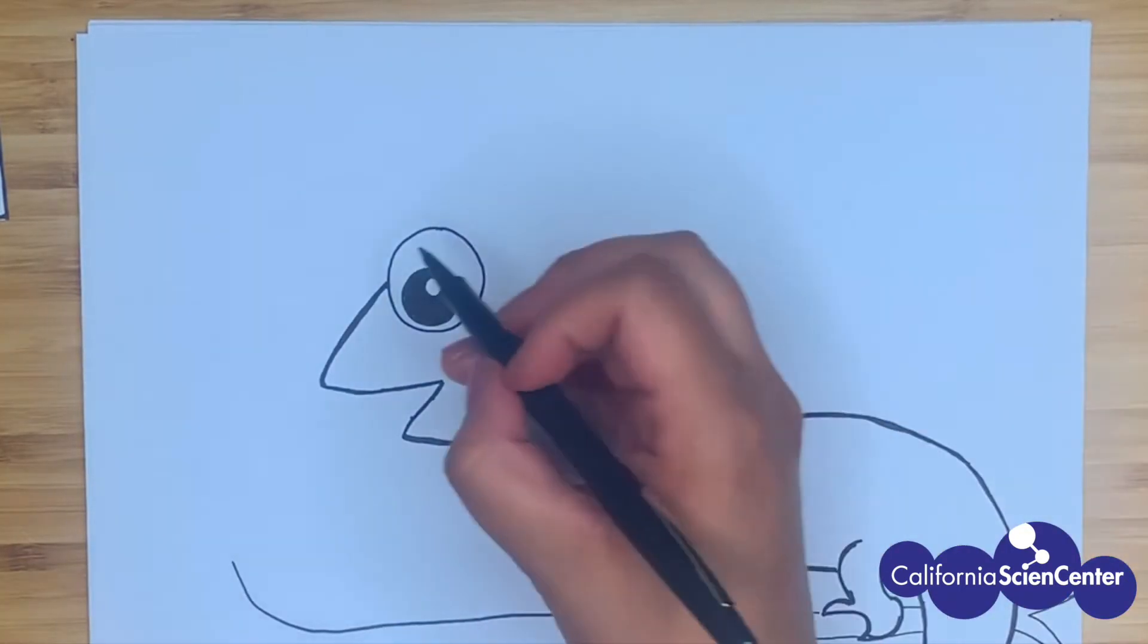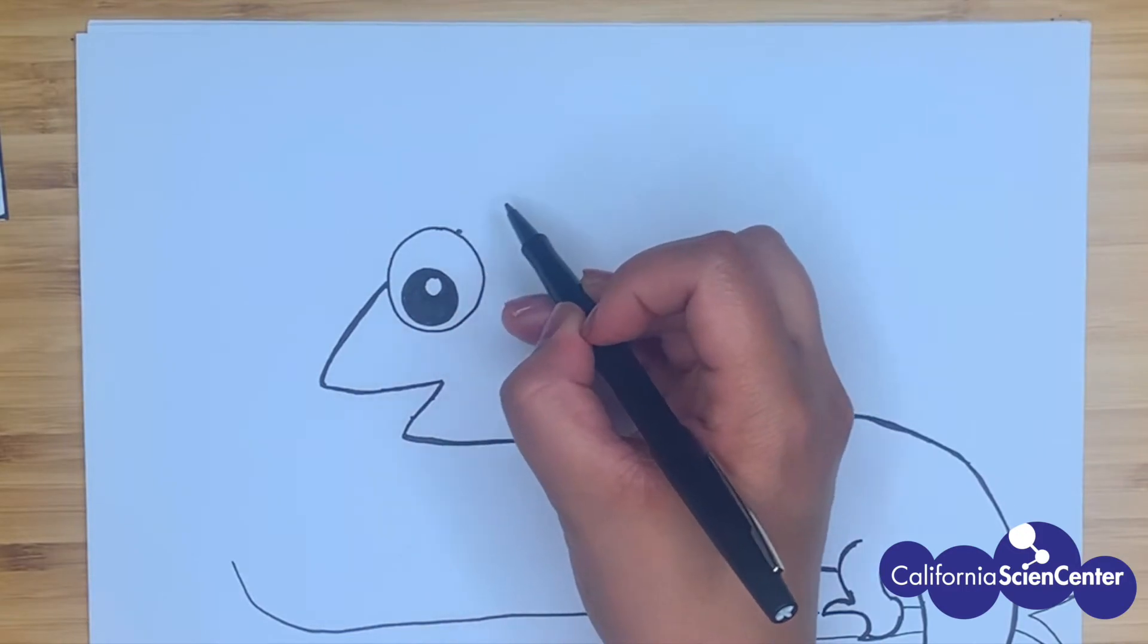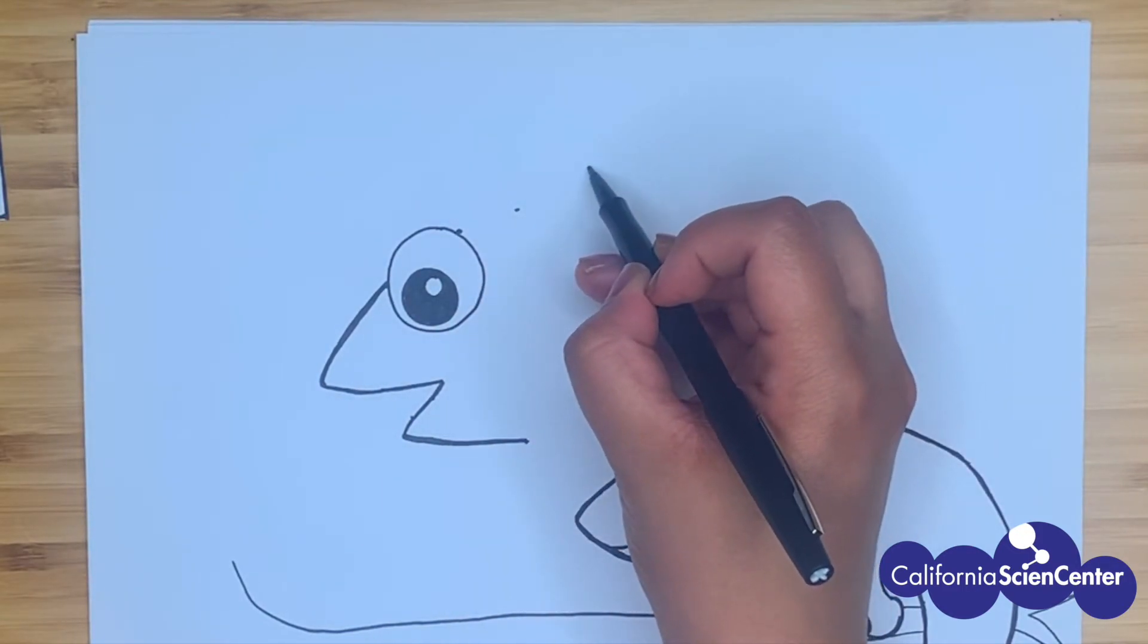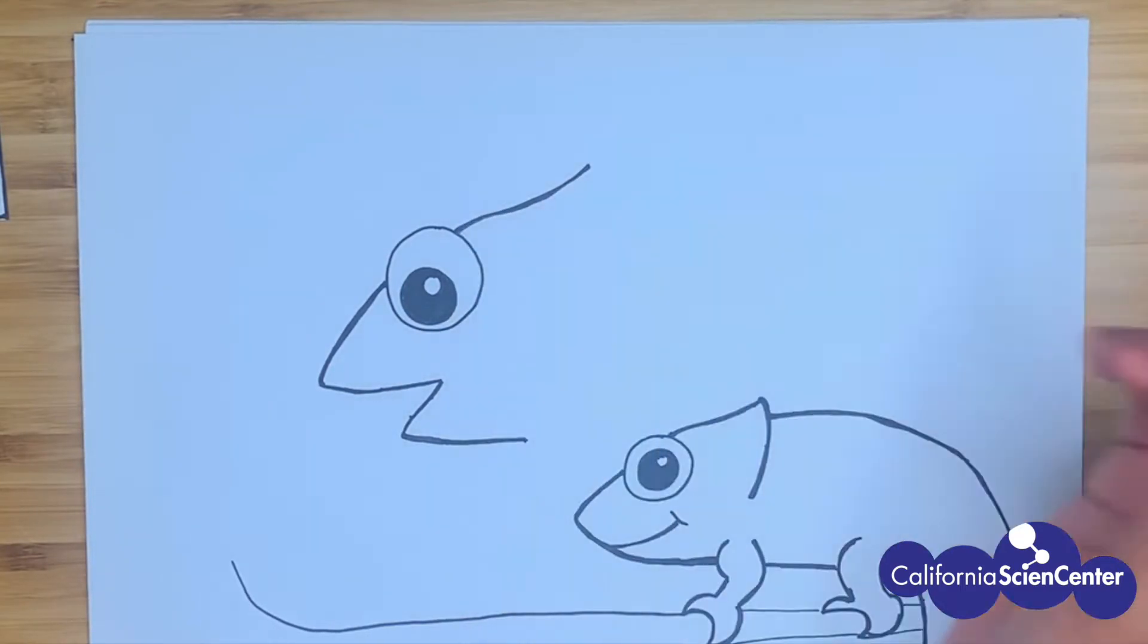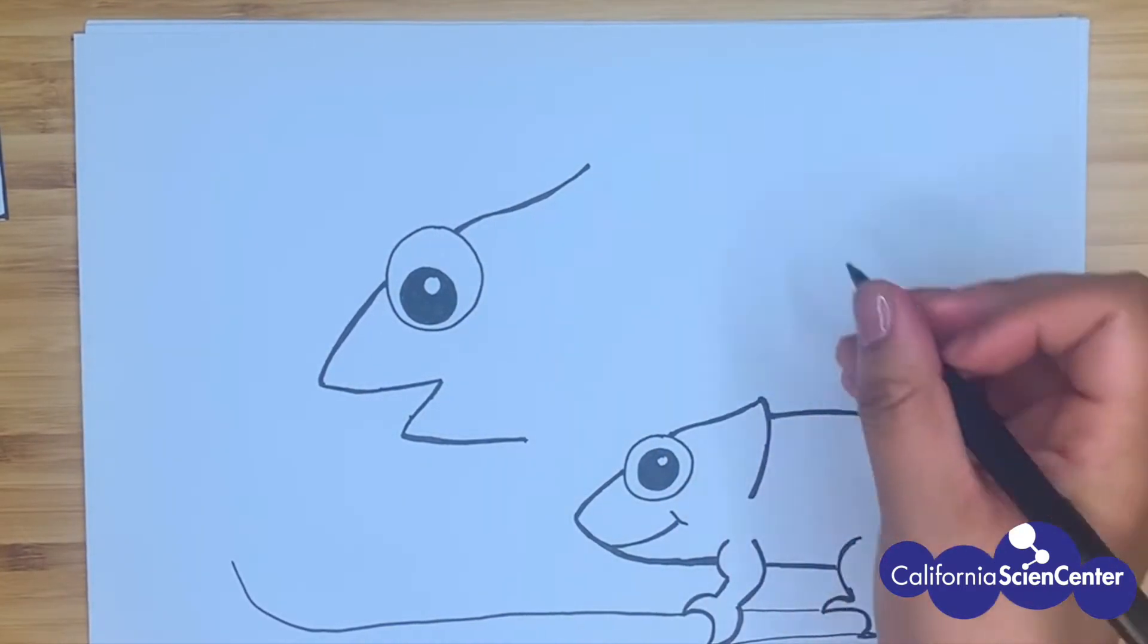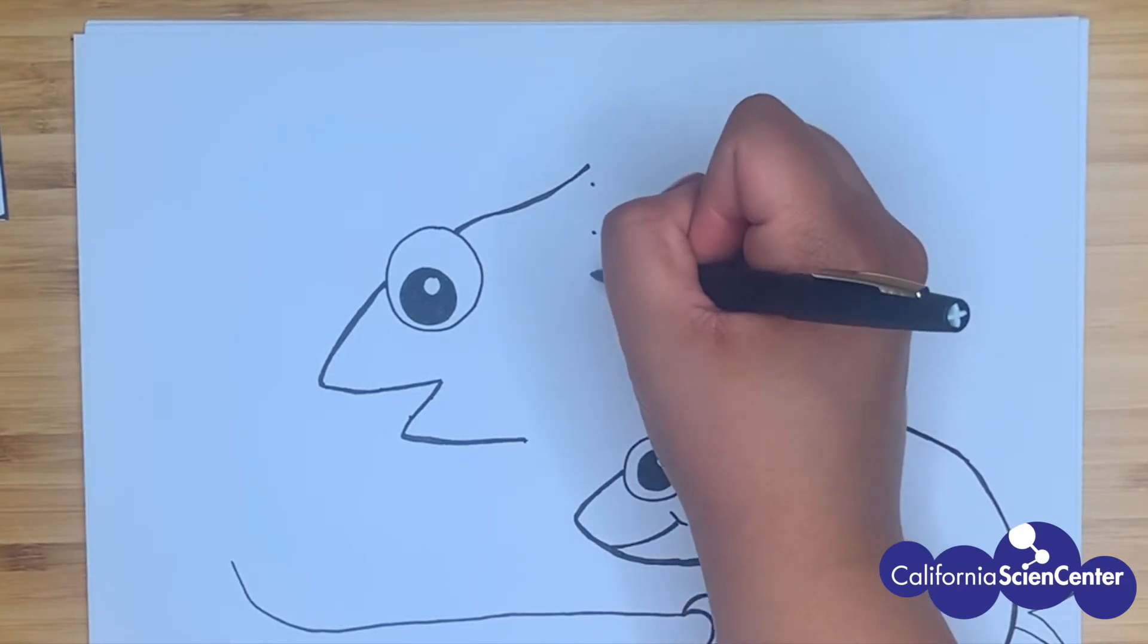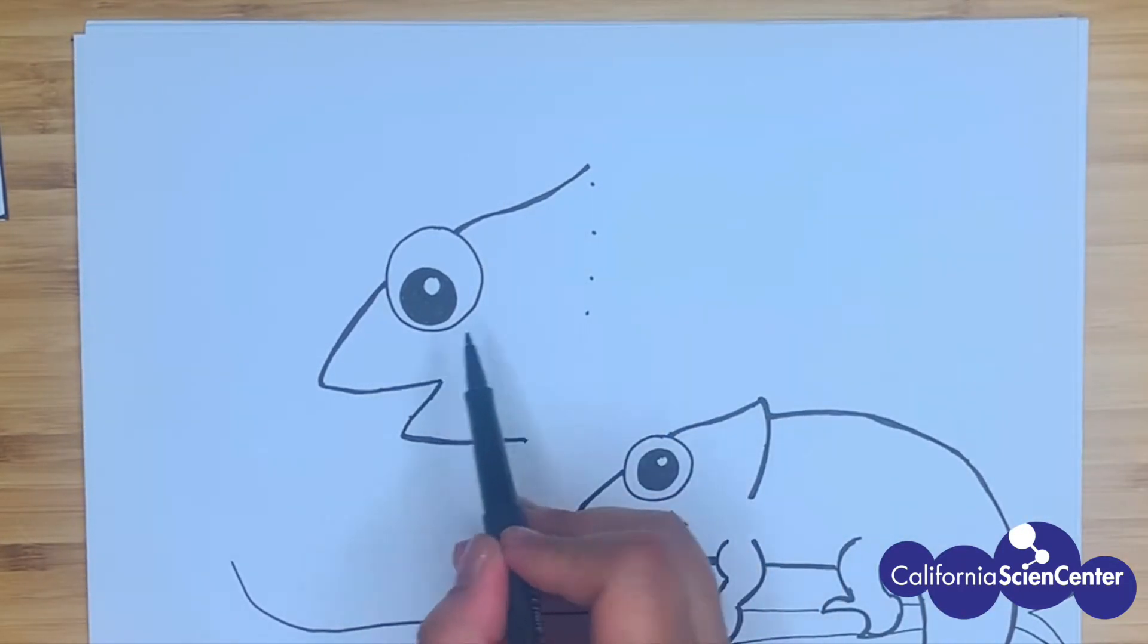I'm using baby chameleon's features to help me draw mama chameleon. Since they are related to each other, I know that traits from one generation are passed down to another. Mama chameleon passed down her features to baby. And that's why they look so much alike.